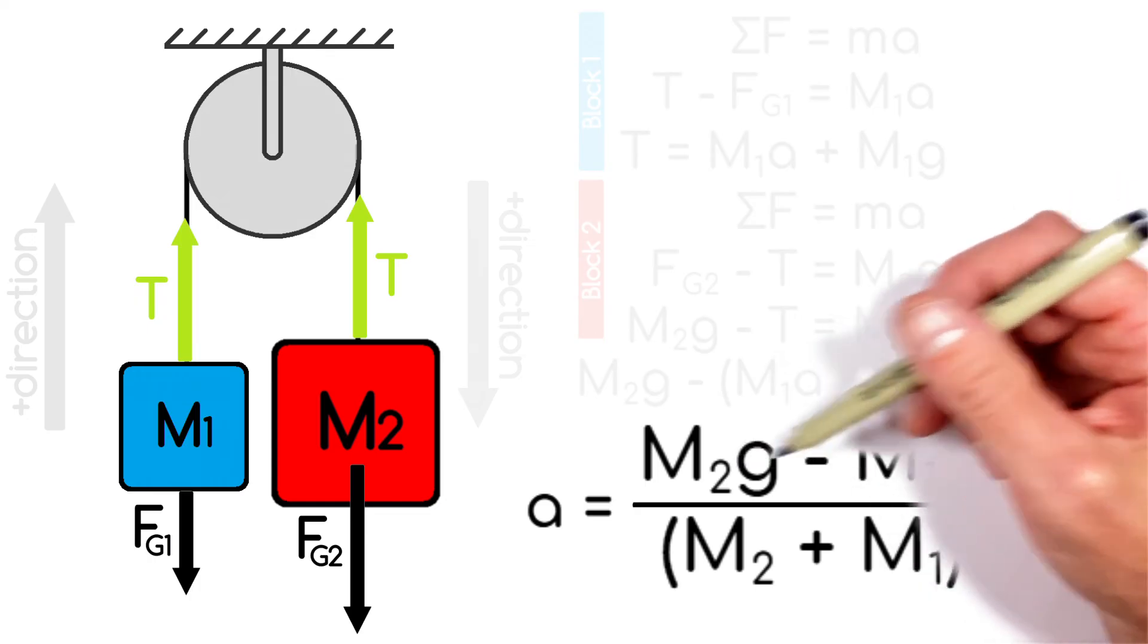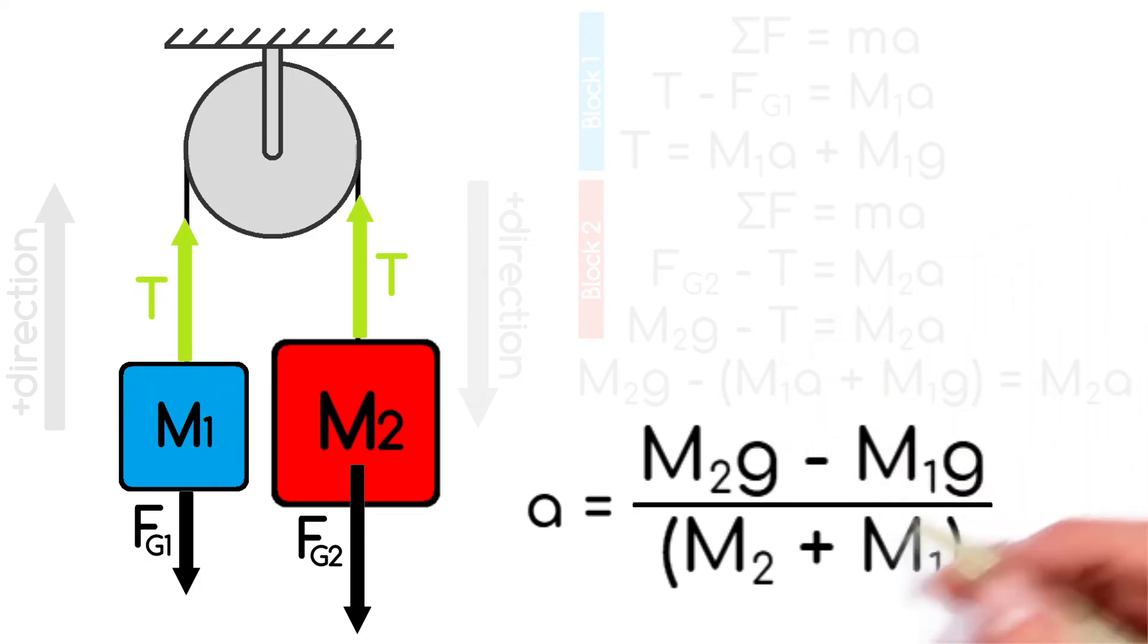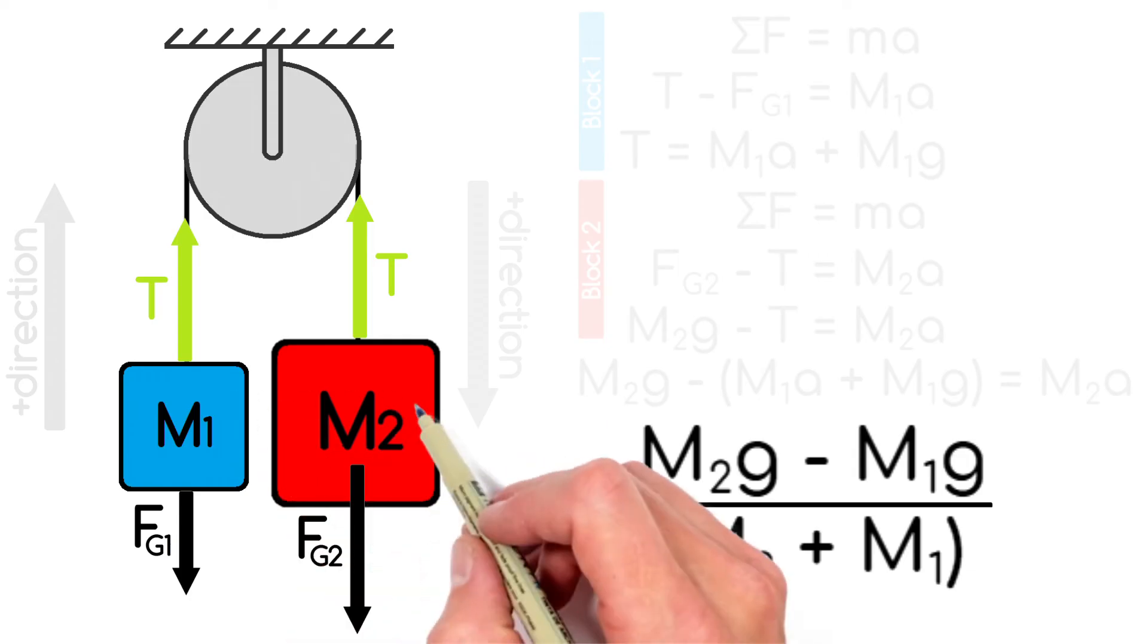So provided you know the two masses and gravity, you can solve for the acceleration of either of these blocks.